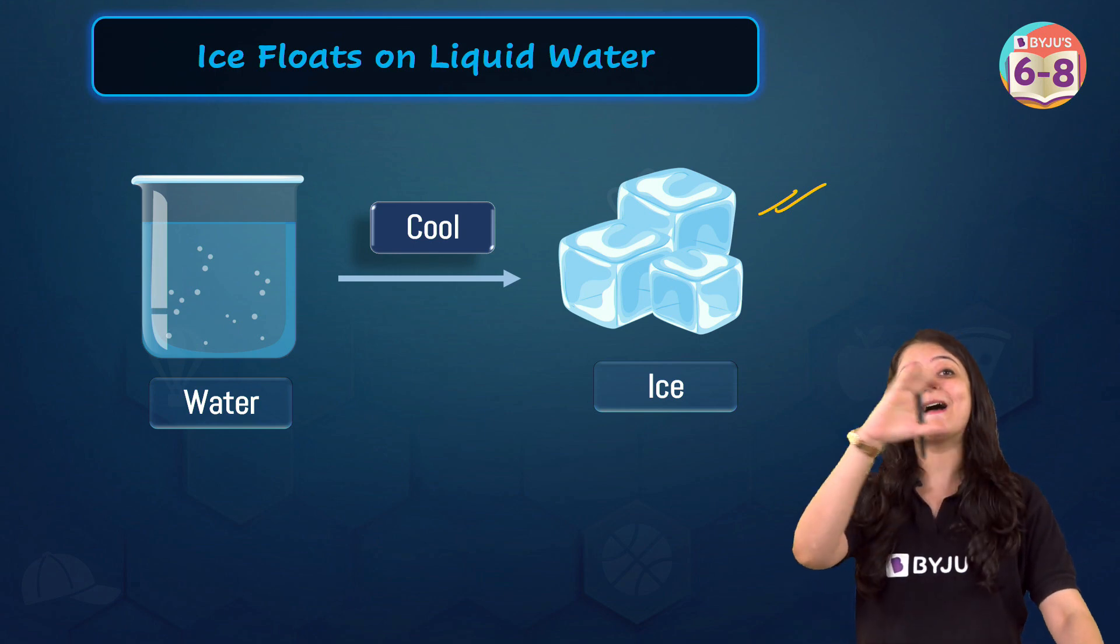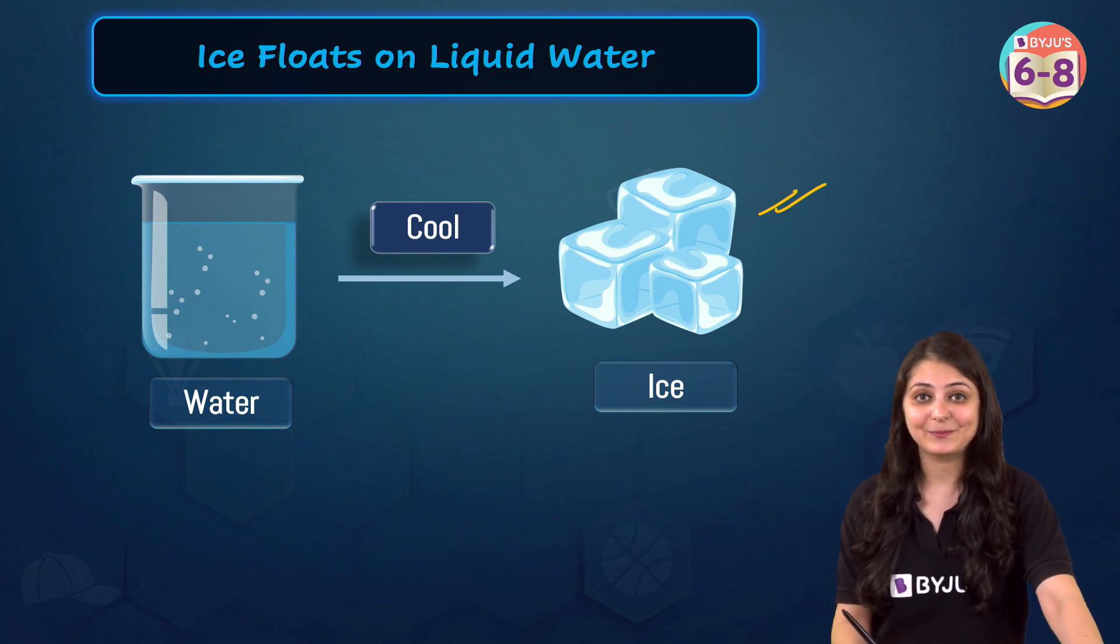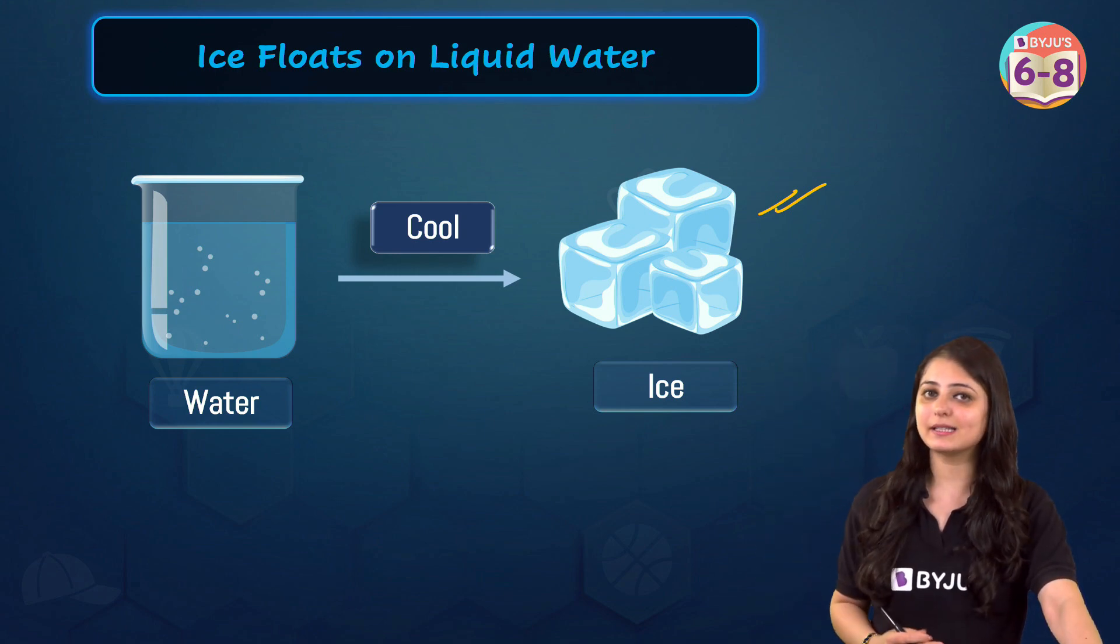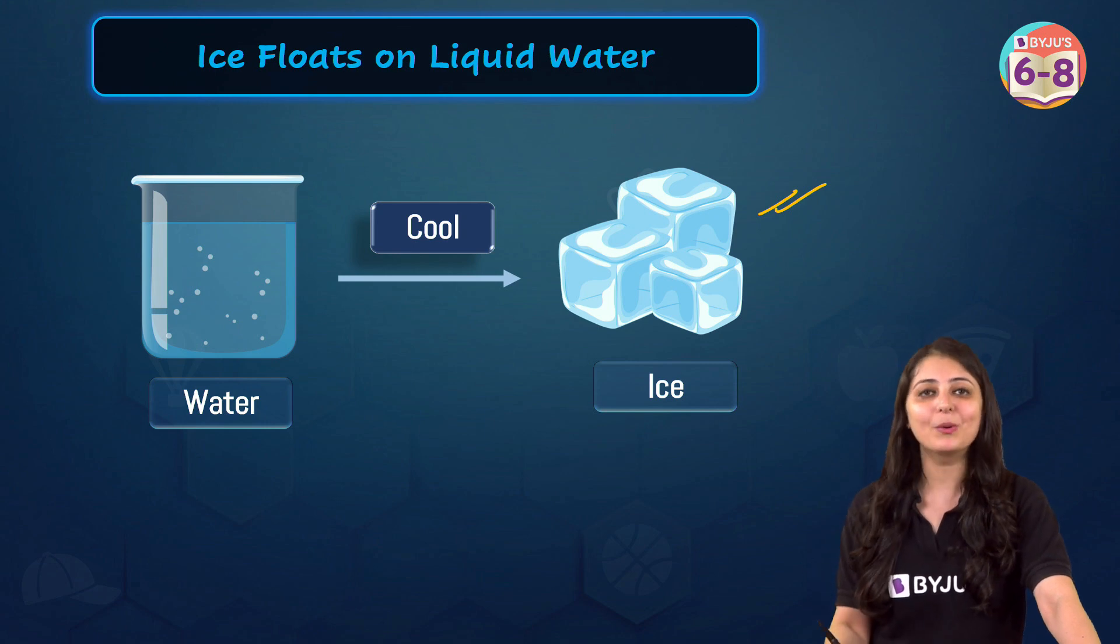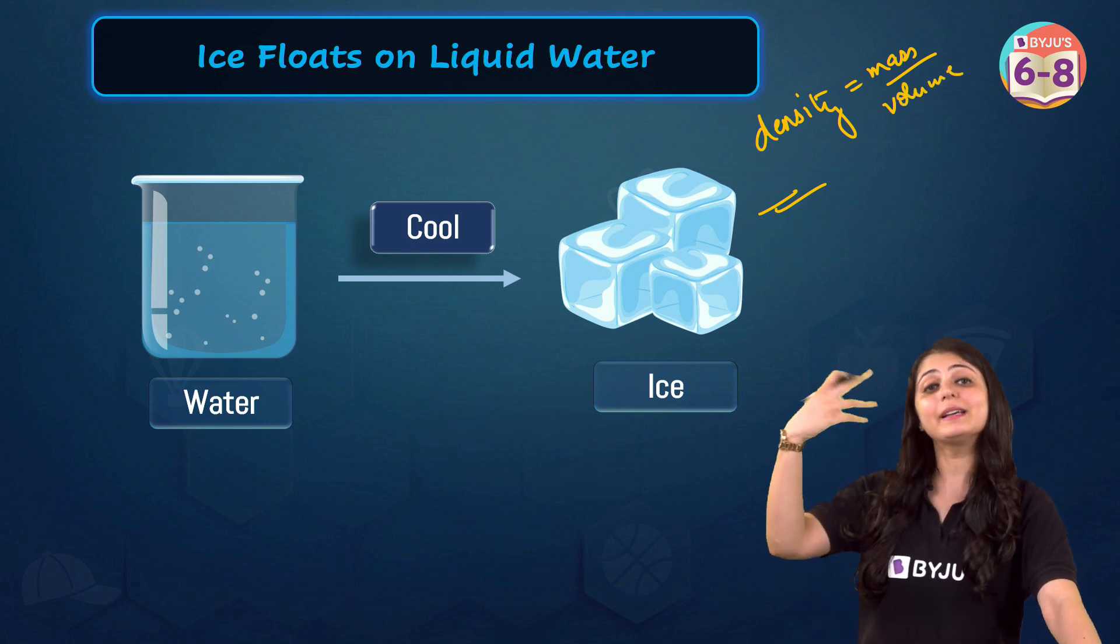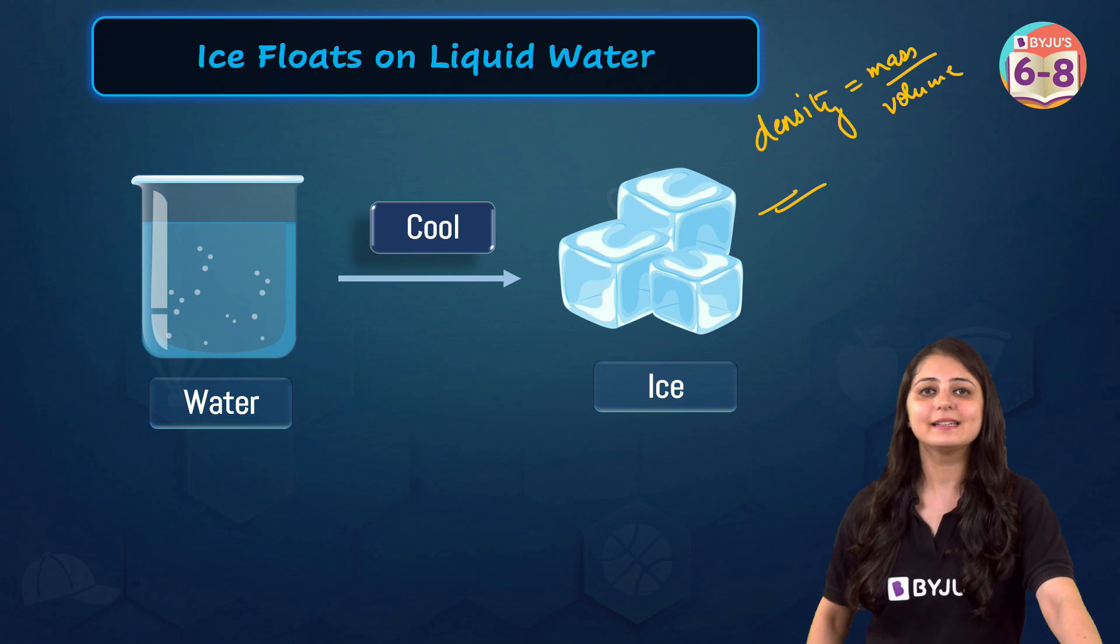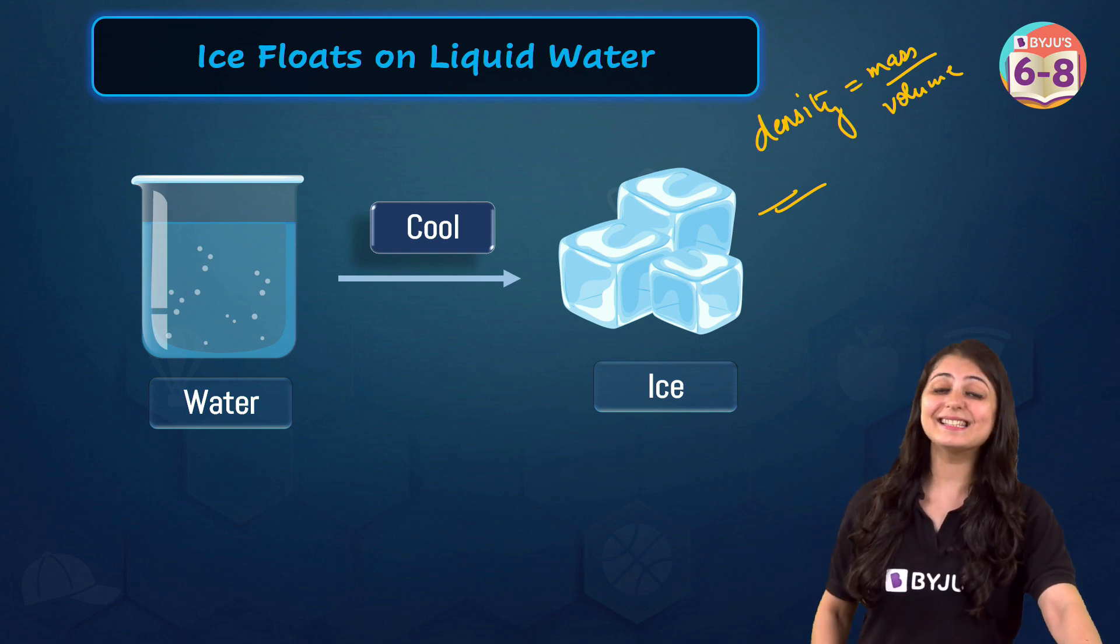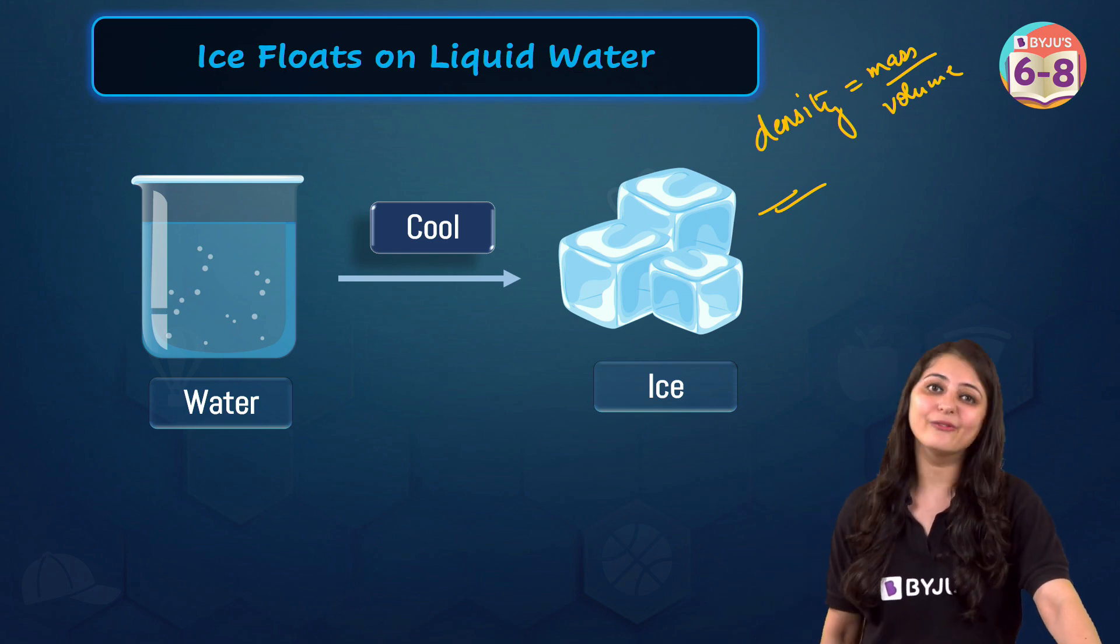Water molecules expand on freezing. So, for a given mass, volume of ice is actually more than that of water. And what's density? Density is equal to mass per unit volume. So, if volume increases, density decreases. So, ice is less dense than water.